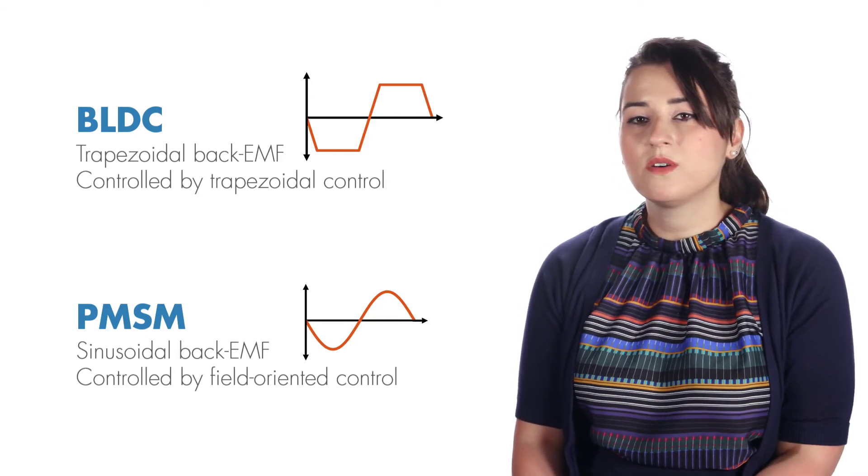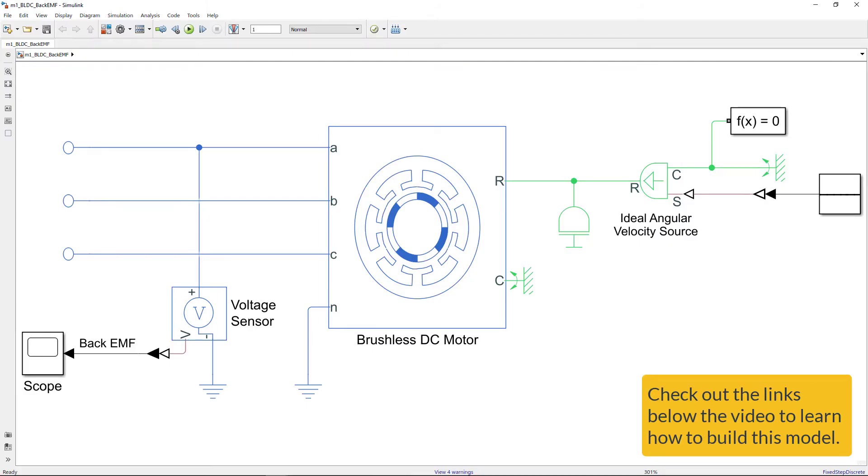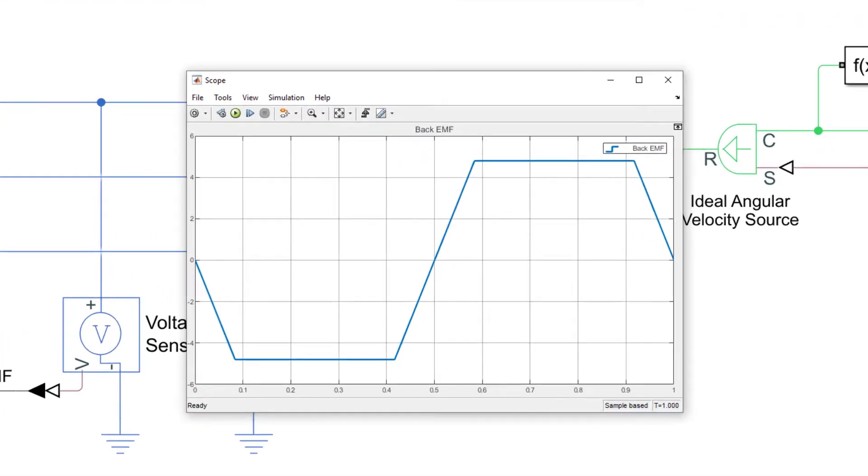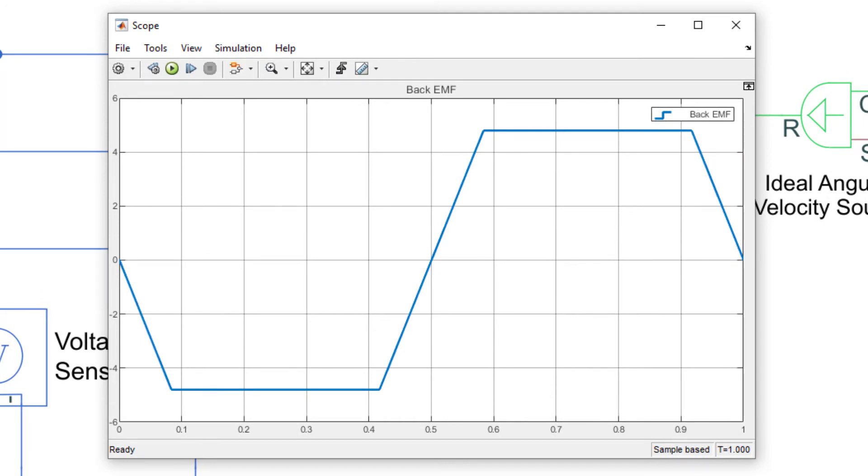An easy way to observe the back EMF shape is to use simulation. We can simulate a one-pole pair BLDC with open-circuit terminals. This means none of the coils is driven, but we can apply some torque to rotate the rotor so that it acts like a generator and then measure the voltage at phase A, which will give us the phase A back EMF. As you see on the scope, the back EMF of the BLDC motor has a trapezoidal shape, which includes regions where the voltage remains flat. This tells us we can control this motor using DC voltage.